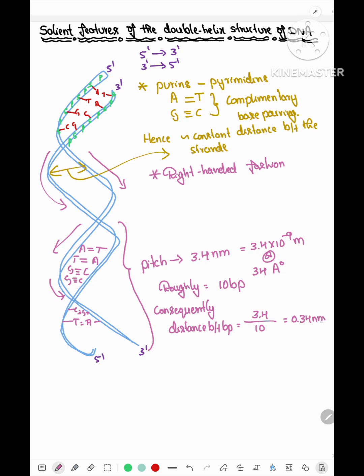consequently, the distance between base pairs is 0.34 nanometers or 0.34 × 10⁻⁹ meters or 3.4 angstroms. The DNA double helix is very stable and for this stability, there are two reasons.